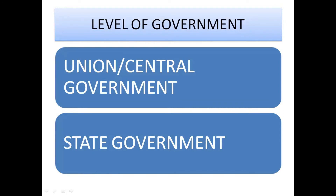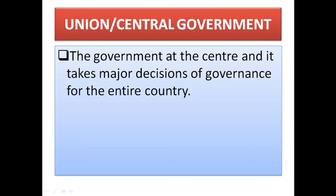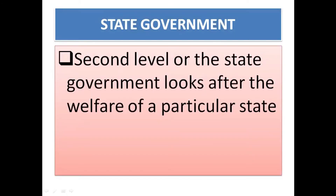Next is the level of government. The first level is the union or central government, which is at the center and takes major decisions for the entire country. The second level is the state government. Since the country is vast, it is divided into states, and each state has its own government which takes decisions for that particular state and solves its problems. The third level is the local self-government, which looks after the local needs of the people.